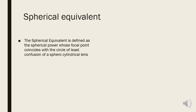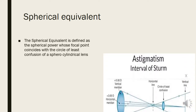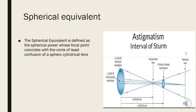A sphero-cylindrical lens is also called a toric lens. Looking at this diagram, we have a toric lens with plus five diopters in the vertical meridian and plus three diopters in the horizontal meridian — two different curvatures in both meridians. One meridian is steeper and one is flatter, so they create two different focal points.